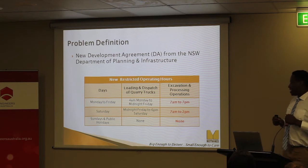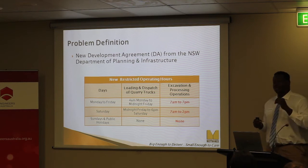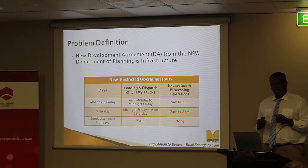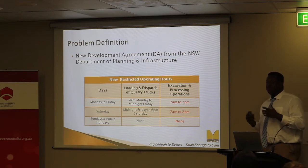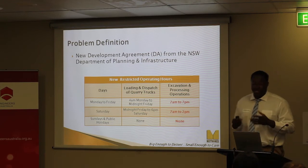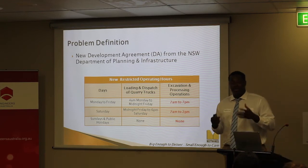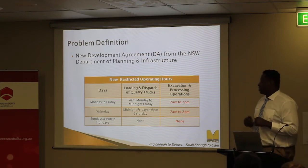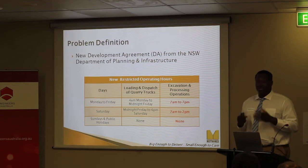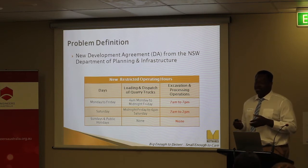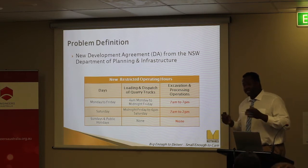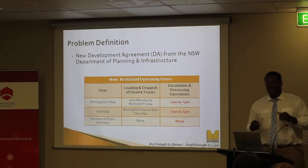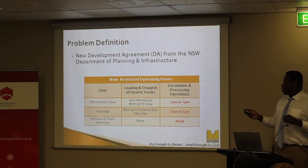As an example, under the previous development agreement, the quarry was capable of producing up to 750,000 tons of sellable product. However, last year under the new agreement, they could only produce 640,000 tons. So there is a need now to optimize the quarry.